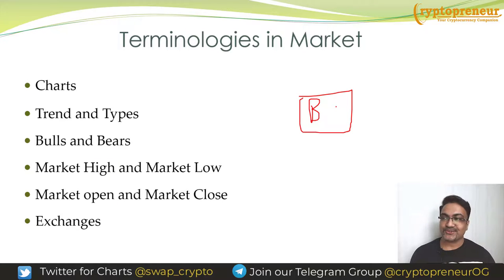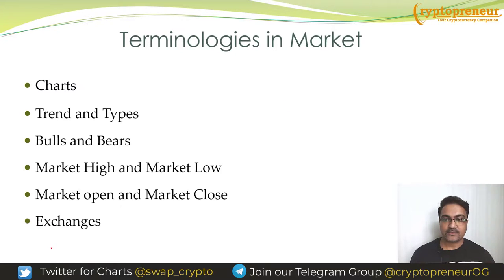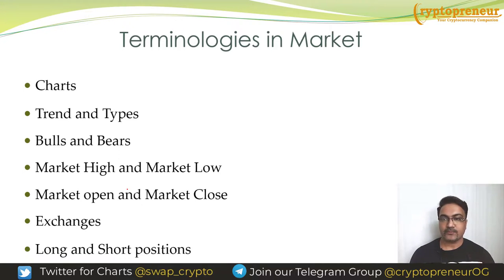Exchanges — you must have heard of Binance and FTX, which recently crashed. These are called exchanges where you can buy and sell your cryptocurrencies. Just like the stock market has brokerage houses and brokers, in crypto we have exchanges where we trade our assets. Exchanges are where we buy and sell as traders.